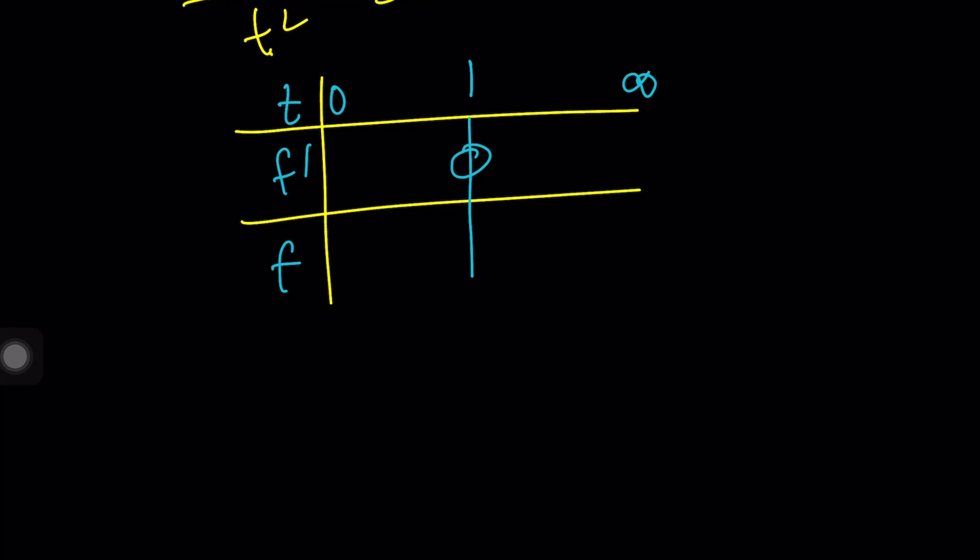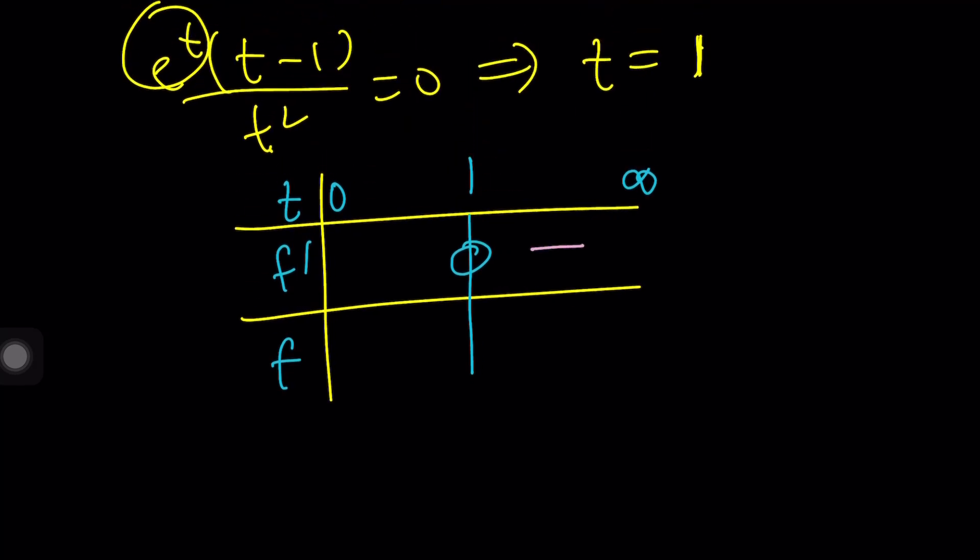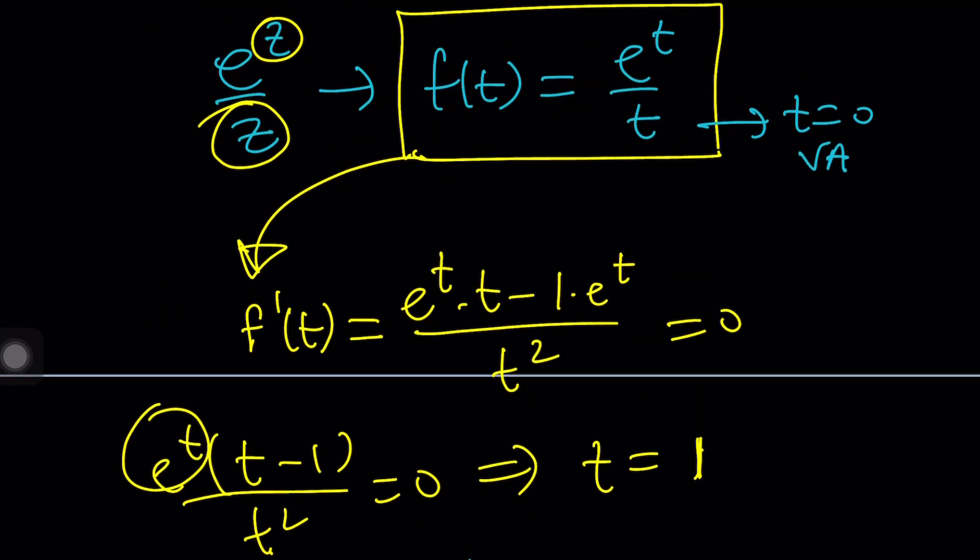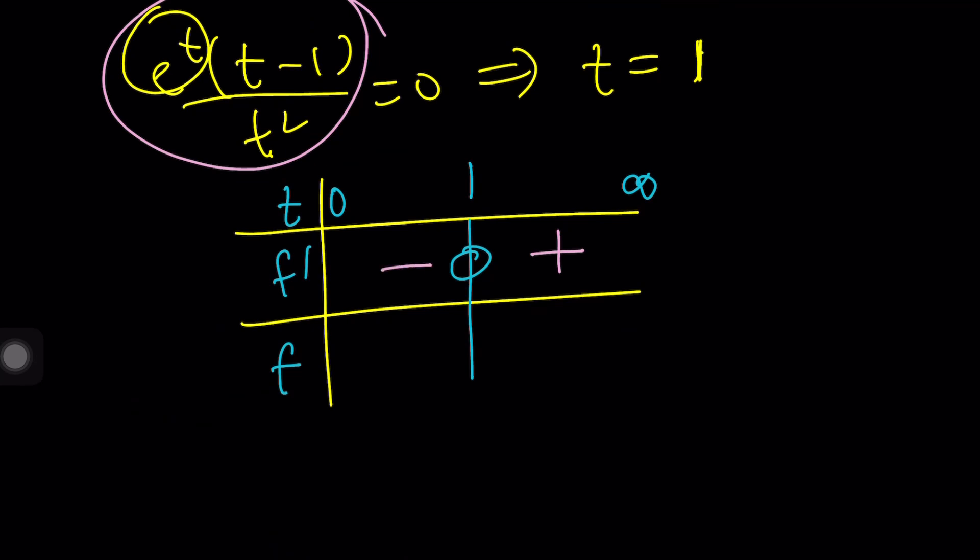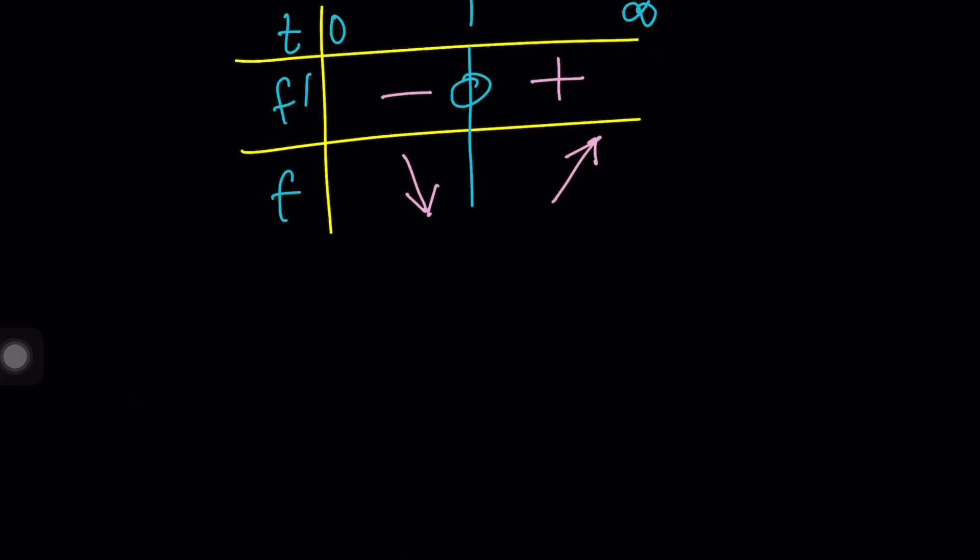So, here's what we get. The derivative is going to be positive when T is greater than 1. You can tell from here, hopefully. And then it's going to be negative otherwise, which means our function is going to decrease and then increase. This is why I love graphs or tables because this clearly shows that we have a minimum at T equals 1. Nice.